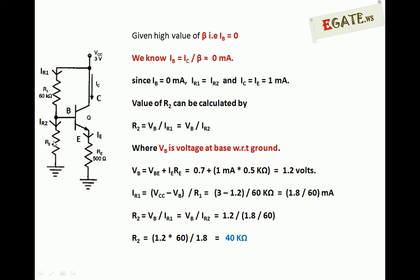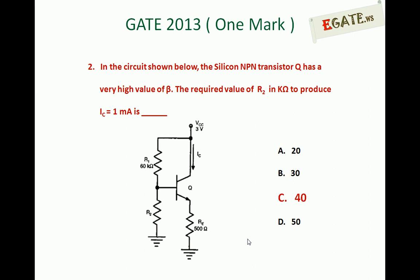The same current flows through R2, so R2 equals base voltage divided by IR2. That is 1.2 divided by 1.8 by 60, which gives 40 kilo ohms. So the value of R2 is 40 kilo ohms. The right answer for the given question is 40 kilo ohms. Thank you.